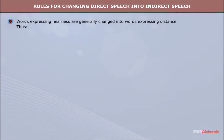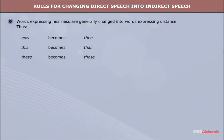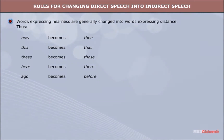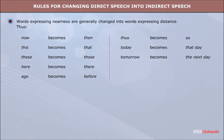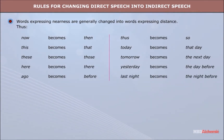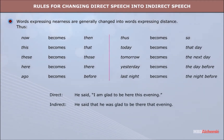Words expressing nearness are generally changed into words expressing distance. 'Now' becomes 'then,' 'this' becomes 'that,' 'these' becomes 'those,' 'here' becomes 'there,' 'ago' becomes 'before,' 'thus' becomes 'so,' 'today' becomes 'that day,' 'tomorrow' becomes 'the next day,' 'yesterday' becomes 'the day before,' 'last night' becomes 'the night before.' Direct: He said, 'I am glad to be here this evening.' Indirect: He said that he was glad to be there that evening.